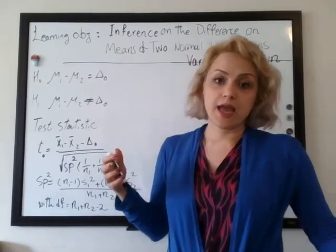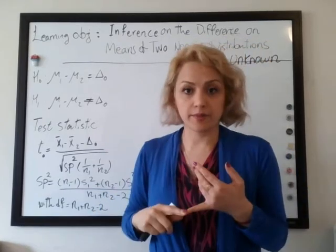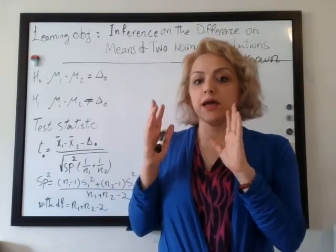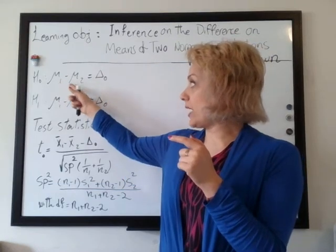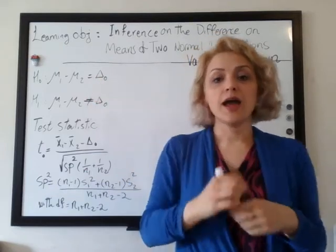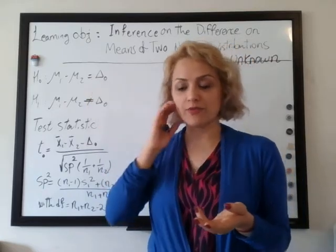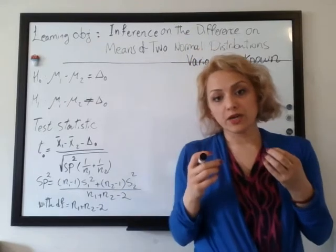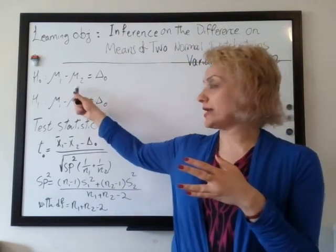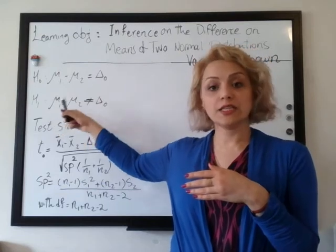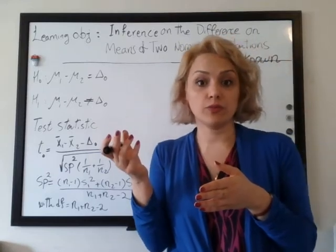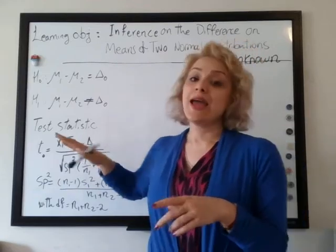For the hypothesis test, step number one is the parameter of interest. The parameter of interest is mu — specifically, the difference between mu1 and mu2. In some books, they write it as mu1 minus mu2 as delta-naught, or in some books as delta D, capital D. It's the same — it doesn't matter, as long as we know the concept behind it. The null hypothesis is that mu1 minus mu2 equals delta-naught or delta D, and the alternative hypothesis is that their difference is not equal to that expected value, delta-naught.